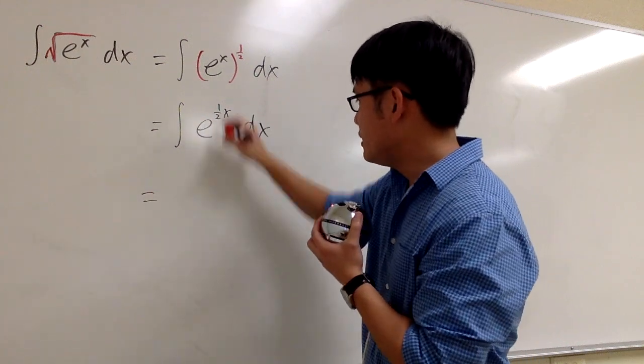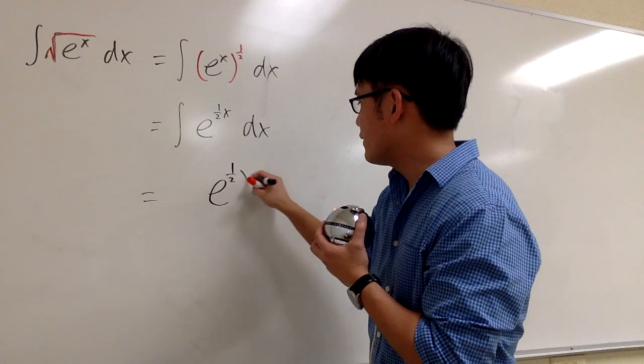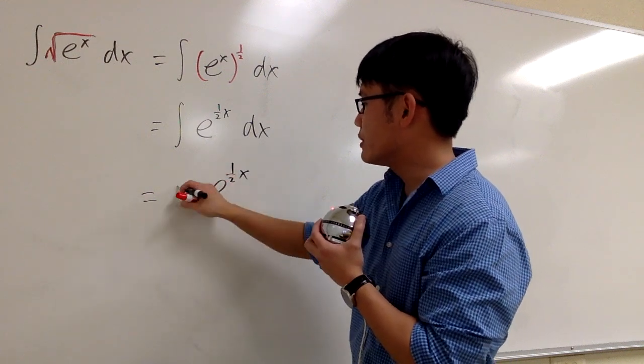So it's the same as you repeat this, e to the 1 half x, but then you divide it by 1 half, which is you multiply by 2.